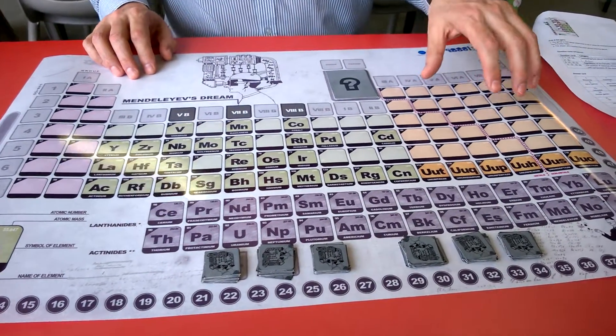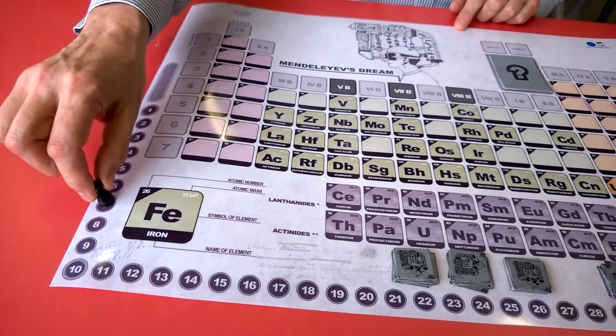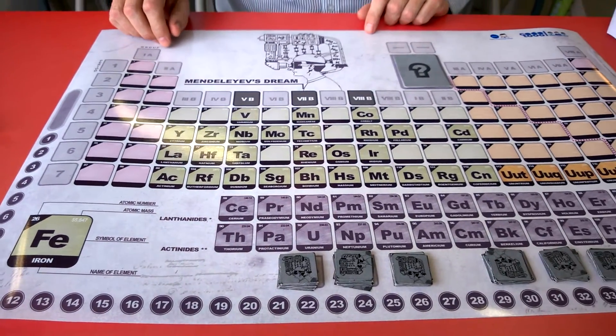Each time you place an element in the correct position you will score a point and gradually as you score more and more points you move around the board and the winner at the end of the game will be the player who scored the most points.